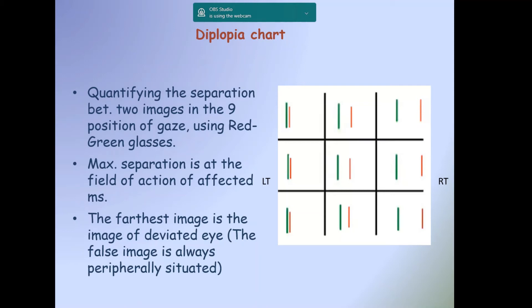The other test is diplopia chart. Diplopia chart is to quantify the separation between two images in nine positions of gaze using red-green goggles. The red is on the right eye and green is on the left eye. We should evaluate the primary position and the position with maximum separation, as the position with maximum separation is the position of the affected muscle or the field of action of the affected muscle.